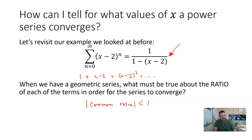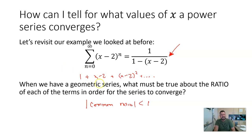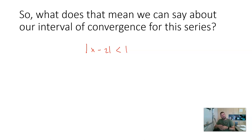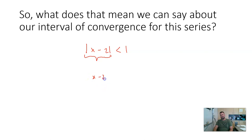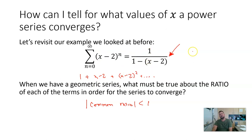My common ratio in this case is (x minus 2), so the absolute value of (x minus 2) has to be less than one. The x-values that make that statement true create our interval of convergence — all the x-values that make our series convergent. To solve the absolute value inequality, we write x minus 2 is less than 1 and greater than negative 1, then add two to all sides to get: 1 is less than x is less than 3.